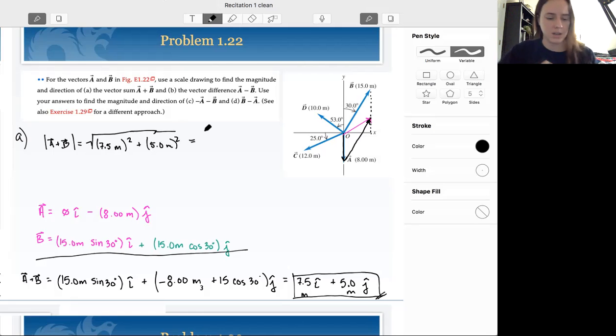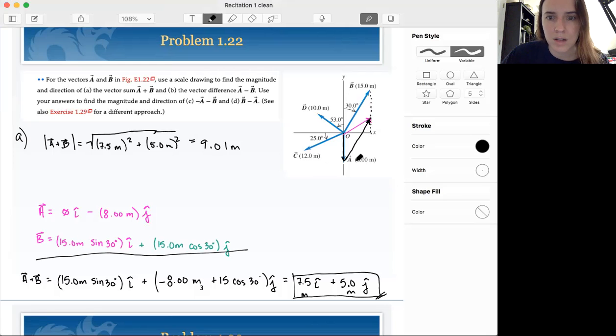I said into our handy dandy calculator. 7.5 squared plus five squared. Oh, square rooted is 9.01 meters. All right. So everything that we have here is three sig figs. Okay, so then to get the angle.